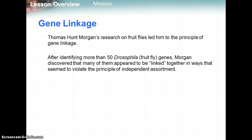Morgan identified more than 50 fruit fly genes and discovered that many of them appeared to be linked together in ways that seemed to violate the principle of independent assortment — where one gene being inherited does not affect another, like a 50-50 coin flip. So independent assortment doesn't always happen, and we're going to see why.